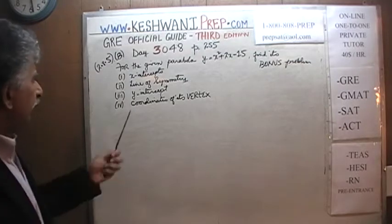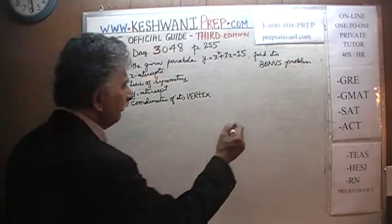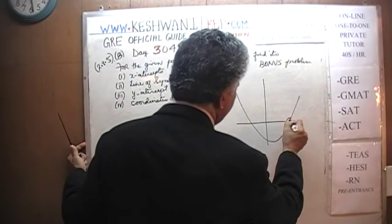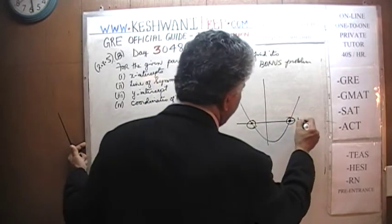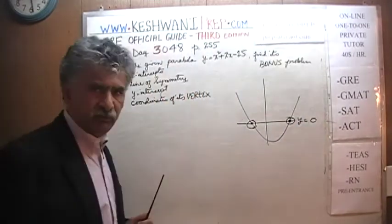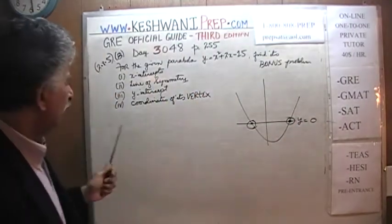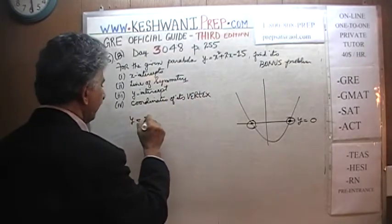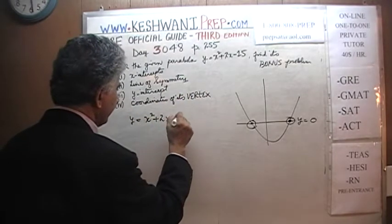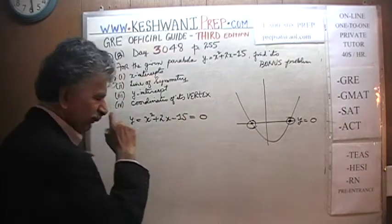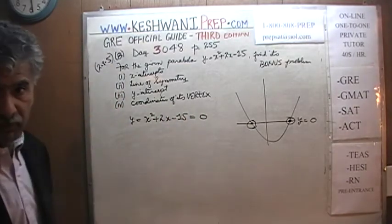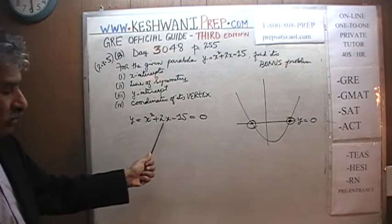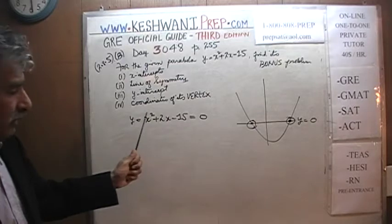First thing first, we are asked to find the x-intercept. We know the x-intercept is where y is equal to 0. So we are going to set our equation equal to 0: x squared plus 2x minus 15 is equal to 0, and we are going to factorize it. We are looking for two numbers whose product has to be negative 15 and whose sum has to be positive 2.